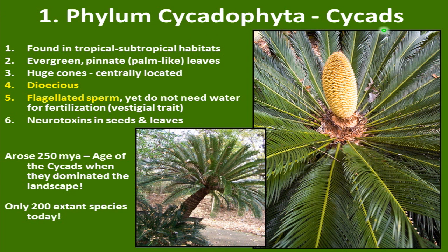The cycads are found in tropical and subtropical habitats — we find these a lot down in Florida, planted as ornamental. They're evergreen, their leaves are somewhat like a feather or pinnate, they have huge cones that are centrally located, and they're dioecious. They have flagellated sperm — you do not need water for fertilization; it's a vestigial trait. They do have neurotoxins in their seeds and leaves. They arose around 250 million years ago when the age of cycads is when they dominated the landscapes, but there are only around 200 extant species today.